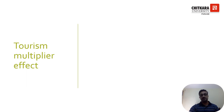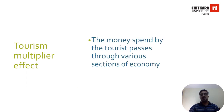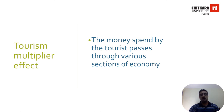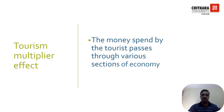Tourism multiplier effect: the money spent by the tourist passes through the various sections of the economy. When a tourist spends money to purchase a service or product, it passes on to the grassroots level. For example, if you purchase a bread, one portion of that money will go to the farmer who is growing that grain.